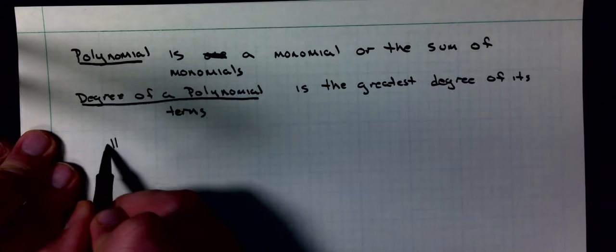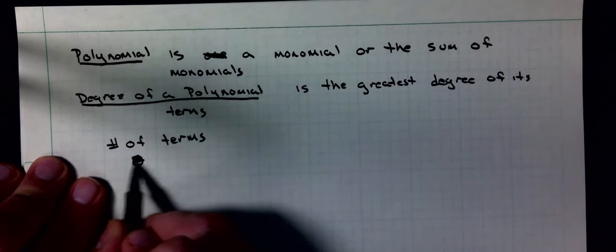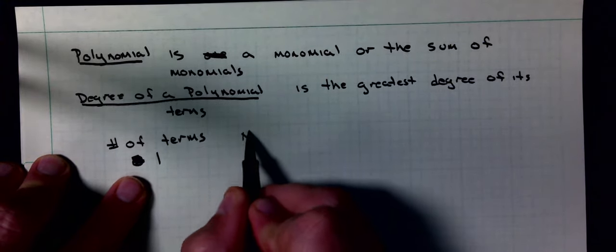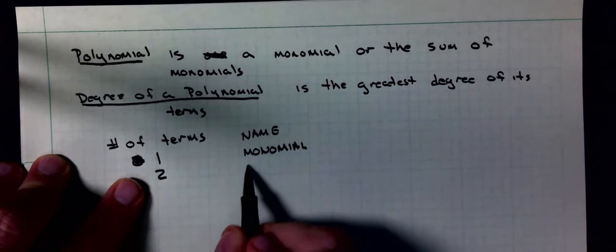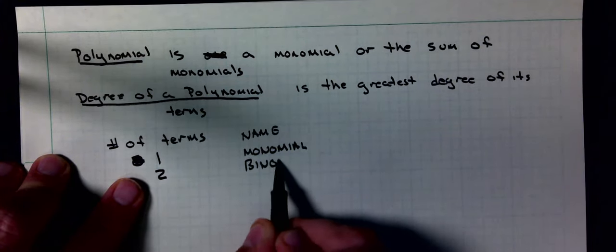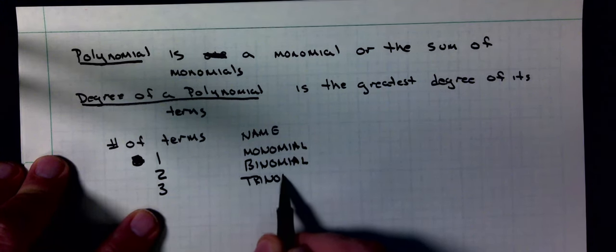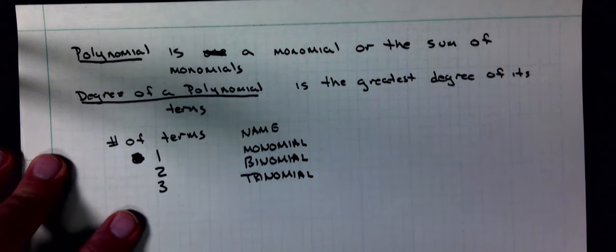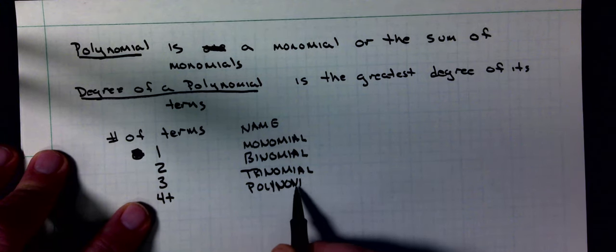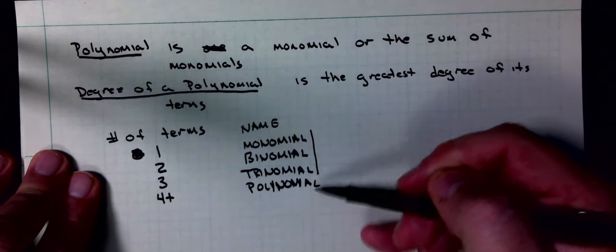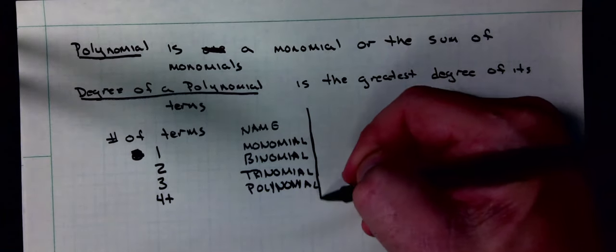We can classify them by the number of terms. If the polynomial has one term, it's a monomial. Two terms, we call it a binomial. If it has three terms, we call it a trinomial. And four plus, we just call them polynomials. We don't call them like quadnomials or quintinomials. That's the first way we can classify them.